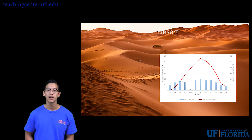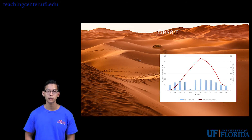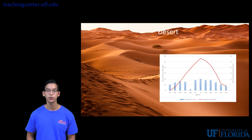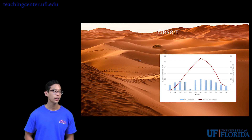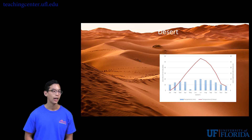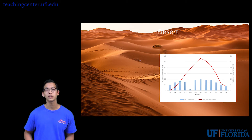Deserts can be hot or cold depending on the season, but generally have low and sporadic precipitation year-round. Vegetation such as cacti conserve water through C4 and CAM photosynthesis, and plants with thorny leaves dominate this biome. Animals have concentrated urine and live underground to avoid overheating; they include ants, gerbils, lizards, and scorpions.